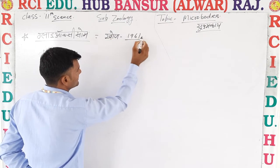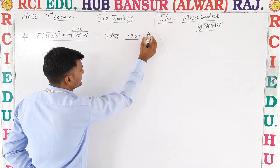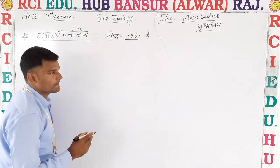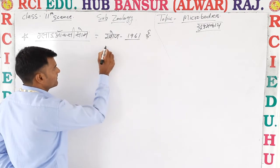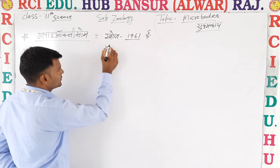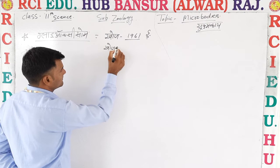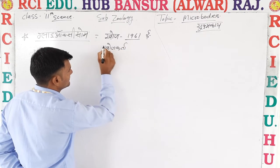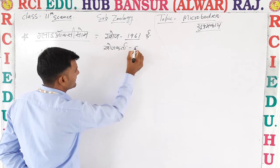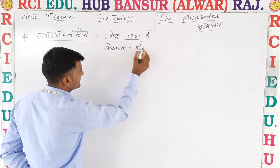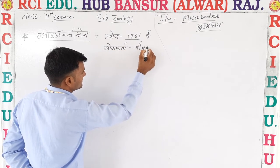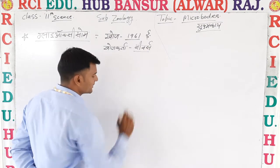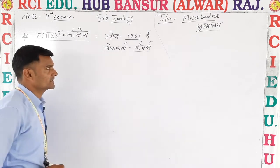The discovery of glyoxysome was made in 1961. Viewers, glyoxysome ki khoj 1961 mein ki gayi.